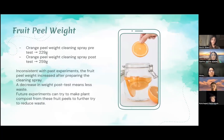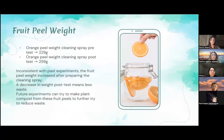Next, we'll be talking about the fruit peel weight. The orange peel weight before we started making the cleaning spray was 229 grams, and after the cleaning spray was made and we took out the fruit peels, it was 259 grams. This was inconsistent with past experiments because the fruit peel waste increased after preparing the cleaning spray, whereas we hypothesized that a decrease in weight post-test would mean less waste. Future experiments can try to make plant compost from these fruit peel waste to further reduce the waste.